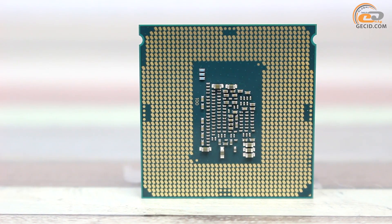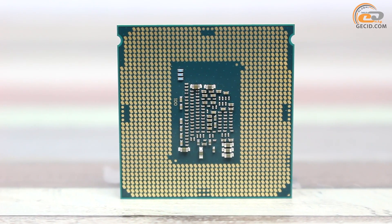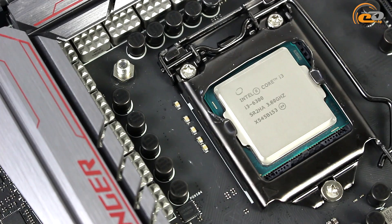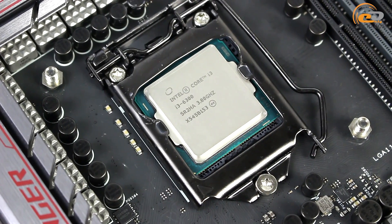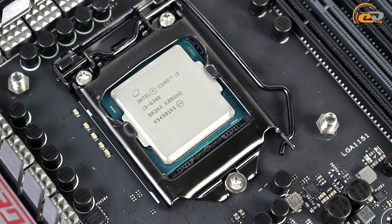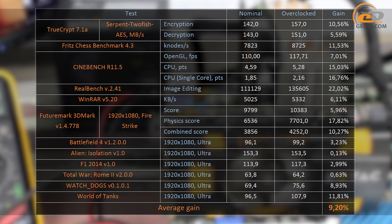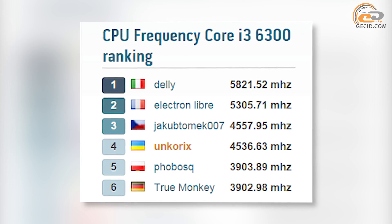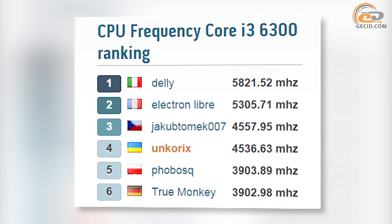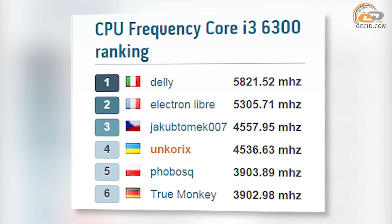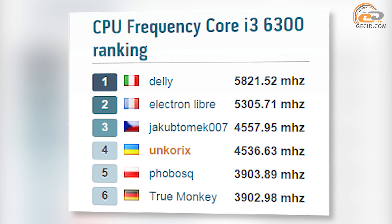Just to remind, Intel does not recommend exceeding 65 degrees, although most diagnostic utilities determine the critical temperature as 100 degrees. During the test we managed to achieve even better performance, but the system operated very unstably and could not pass our proposed test. We did not manage to overclock the integrated graphics core. The average gain in processing speed was just over 9% — not as good as the i3-6100, but not too bad overall. The absolute frequency record for the tested processor stands at 5800.21 MHz, set by an Italian overclocker using a freon cooling system. Our value can also be considered a record to a certain extent, as it is the highest result achieved with an air-cooler system.